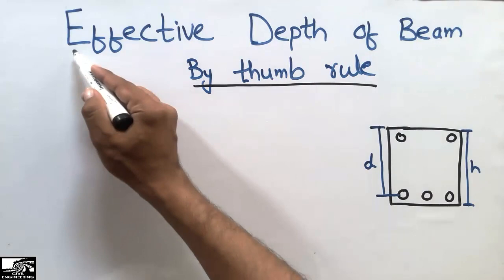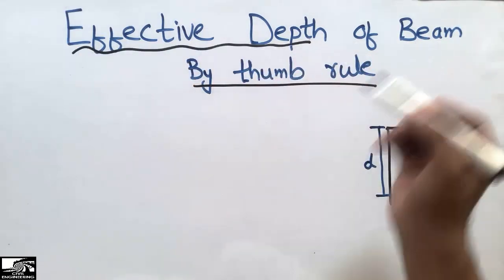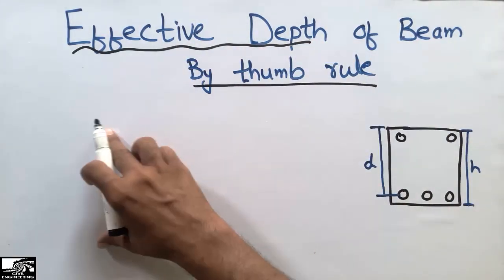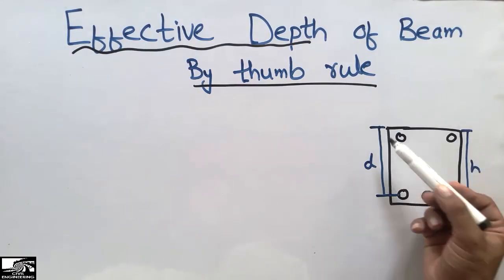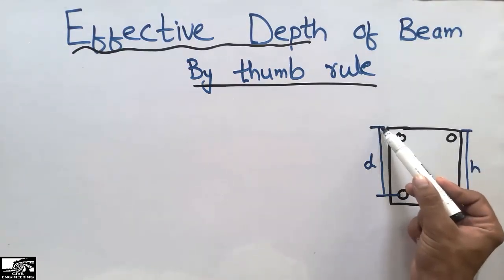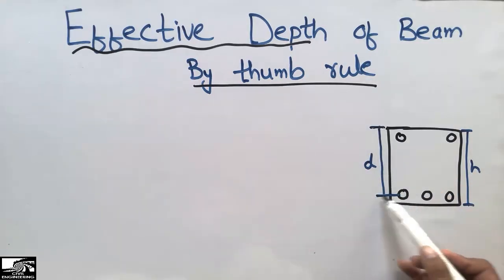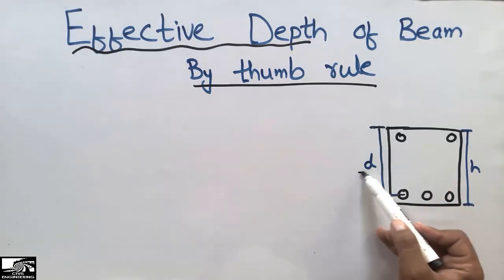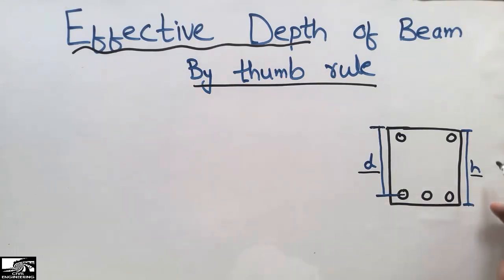This video is specifically about the effective depth of beam by thumb rule — not the overall depth, but the effective depth. We have a separate thumb rule for this. The effective depth can be defined as the depth from the top of the beam (compression zone) to the mid of the reinforcement. As we can see, this distance is known as the effective depth, while the total overall depth is represented by H.